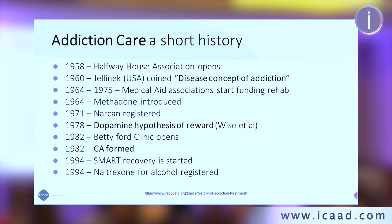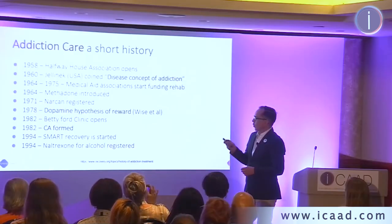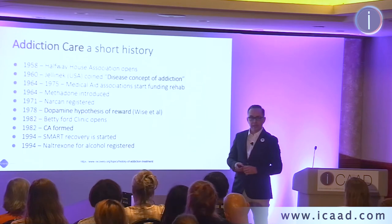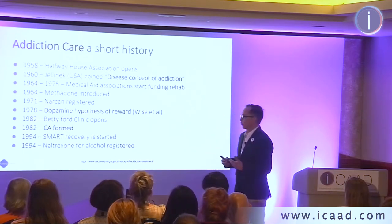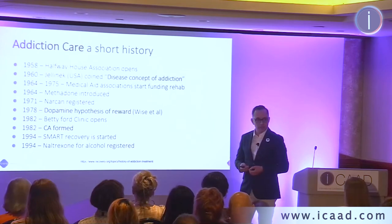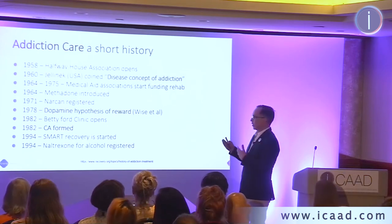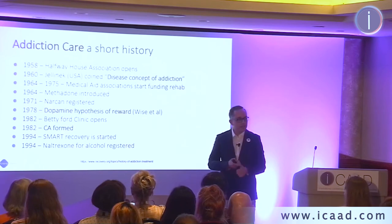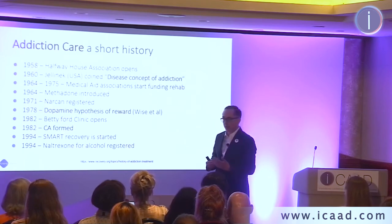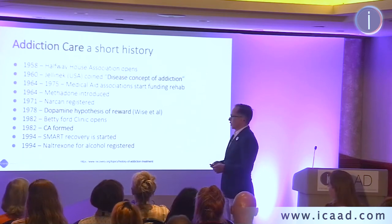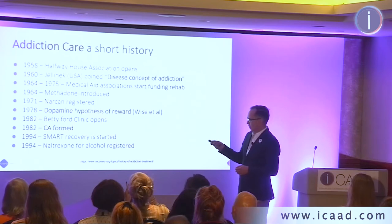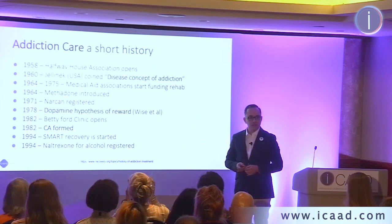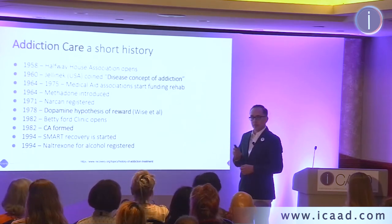Another big milestone was in 1978 when Wise and colleagues discovered the dopamine hypothesis of reward and linked that to addiction. Here we start seeing chemical explanations. As we all know, the role of dopamine in addiction is quite well known — but dopamine is also well known for other illnesses like schizophrenia. So psychiatrists began to look into addiction care as well. We also saw the rise of medications like naltrexone used in addiction treatment, but we still don't have a pill to treat addiction.